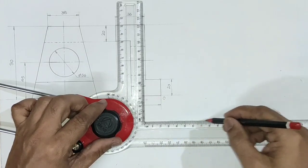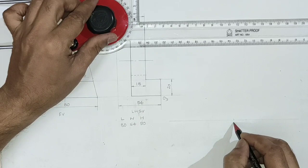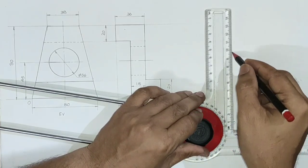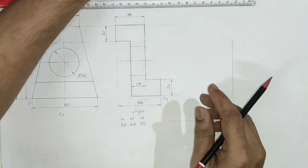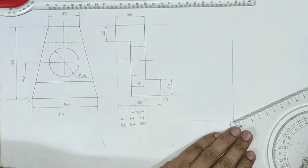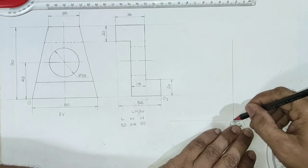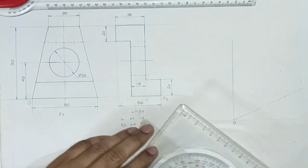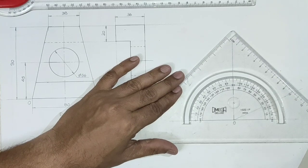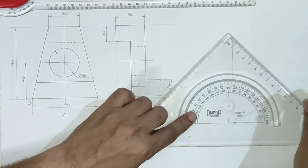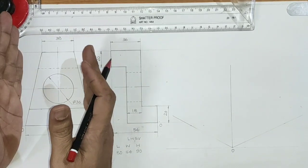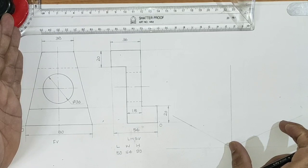Then draw a horizontal line and mark a point on it as the origin. Draw a vertical line through the origin, then draw two lines at a 30-degree angle. As the entire object has occupied the space available to the right of the origin, we are supposed to take length here, that is to the right of origin.